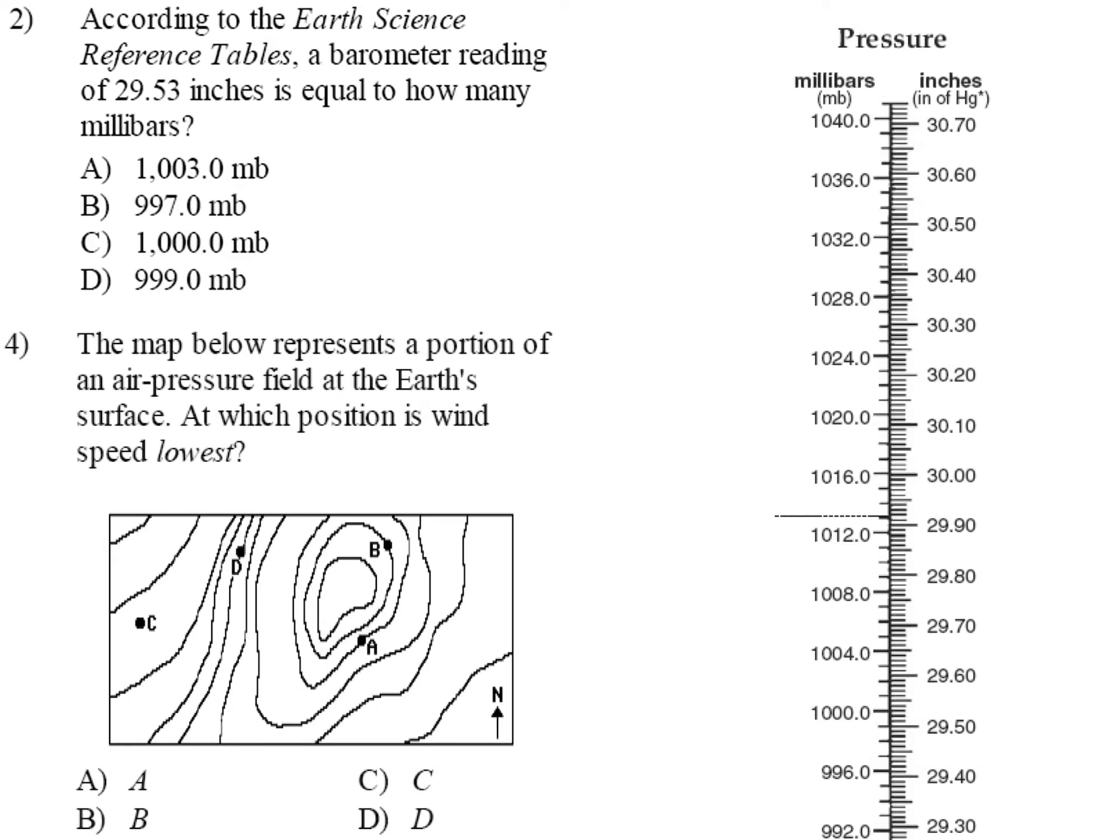Here is using your page I think 15, from your reference tables. This is converting pressures. If they give you a barometric reading of 29.53, remember these are going up by 0.01, so 29.53 is right here, so your answer should be 1000 millibars. Then over here, which position is the wind speed going to be the slowest? We did not learn this yet so we're going to hold off on this one.